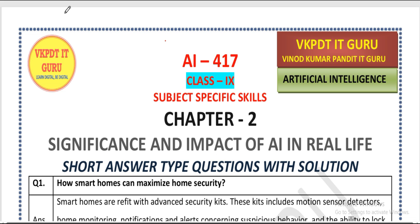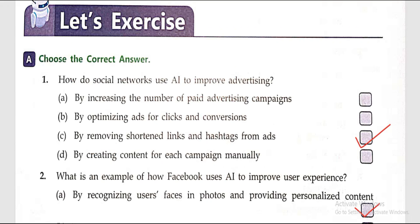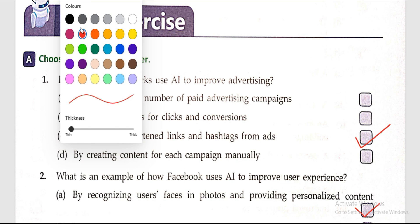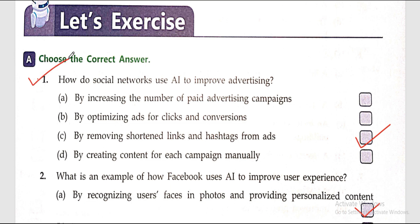First of all, I am going to start my topic from Objective Questions. First question: choose the correct answer. How do social networks use AI to improve advertising? The accurate answer is: by removing certain links and hashtags from posts.